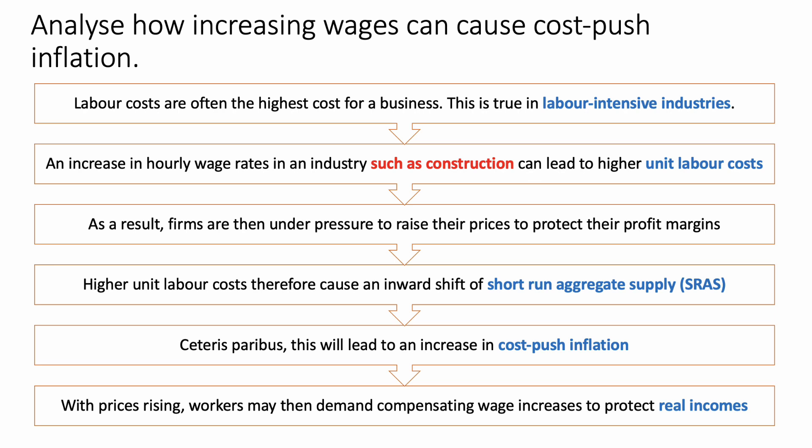As a result — there's a connective — firms are then under pressure to raise their prices to protect their profit margins. Higher unit labour costs can therefore cause — connective phrase — an inward shift of short-run aggregate supply, or SRAS. Ceteris paribus, this will lead to an increase in cost push inflation.